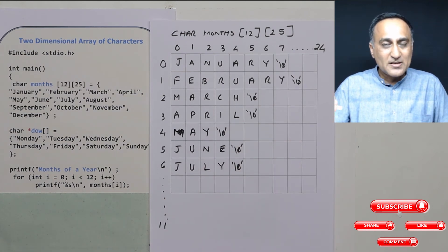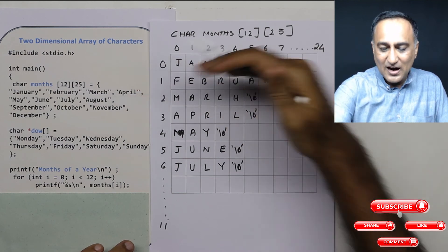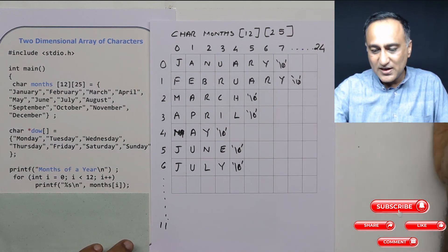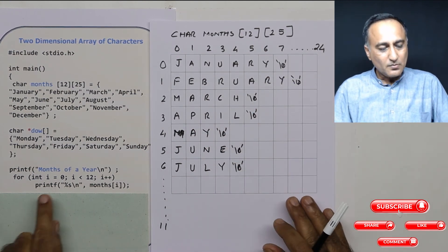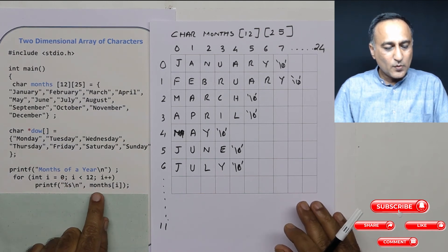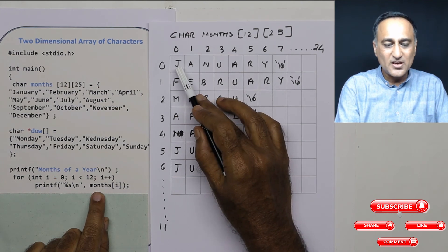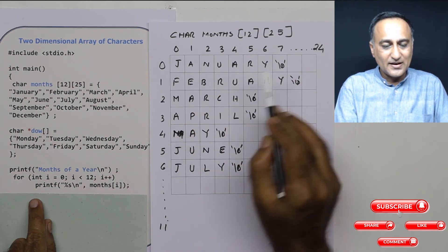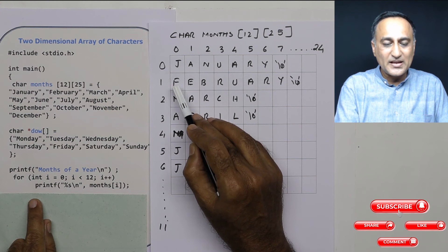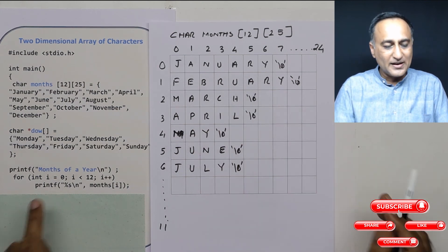In C, a two-dimensional array is actually a collection of multiple one-dimensional arrays. The first one-dimensional array starts, then after 25 characters the next array starts, and so on every 25 characters. When printing months, months[0] sends the address of January — assume it exists at address 1000, so 1000 is sent to printf and it prints until it encounters a null. If February exists at address 1030, that address is sent to printf and it keeps printing until null.